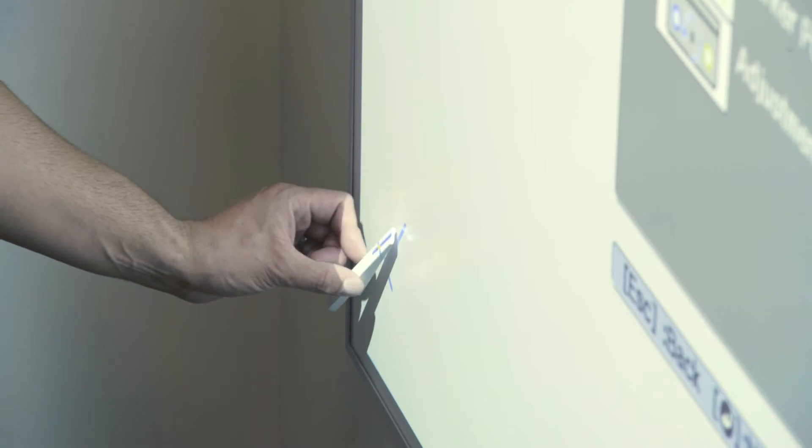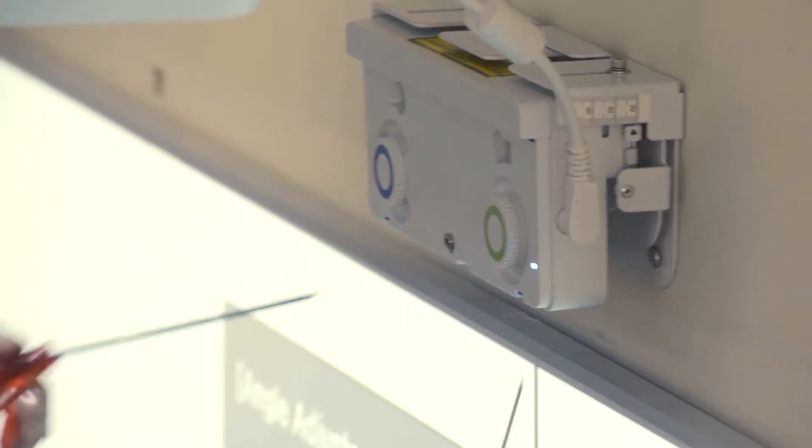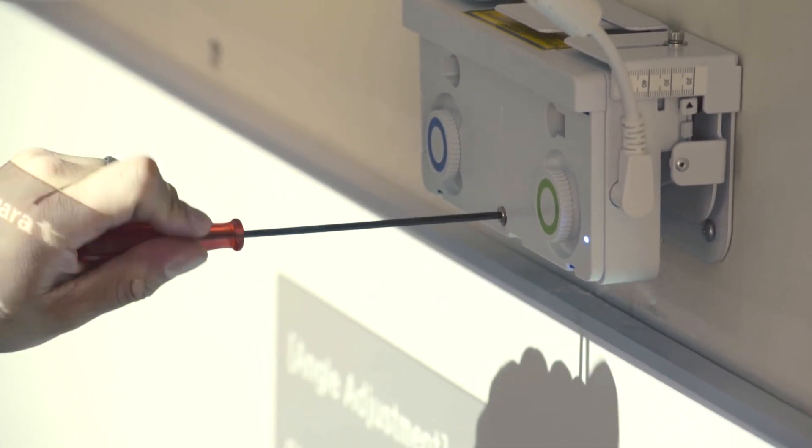Next, you will place the included calibration markers on the designated marks on the whiteboard as displayed by the projector. The circular pointers should appear.